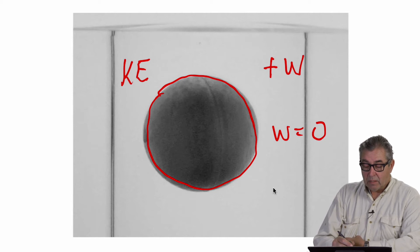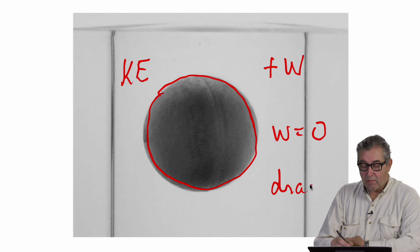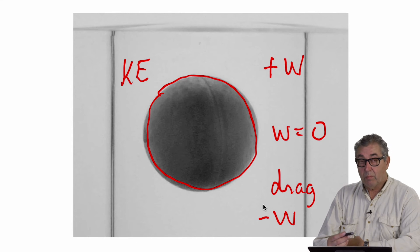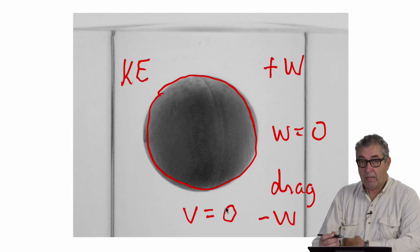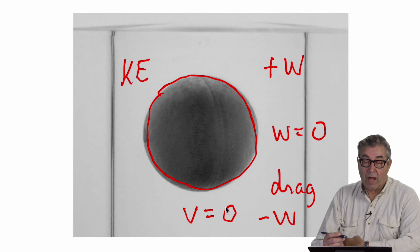As it continues to move downward, drag from the viscosity of the fluid produces negative work which removes the kinetic energy from the ball until the ball stops with no kinetic energy and remains motionless throughout the remainder of the drop.